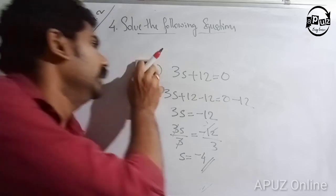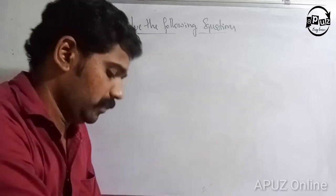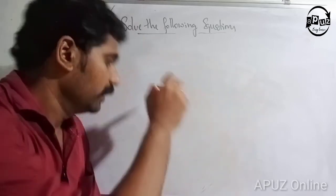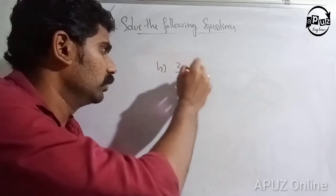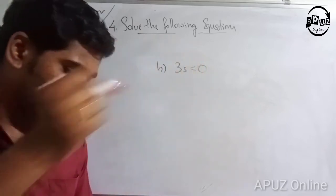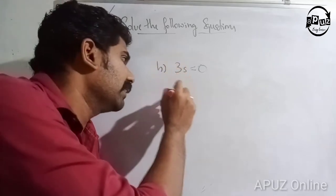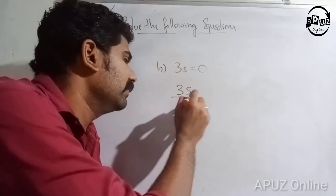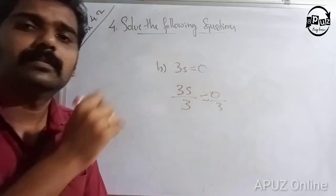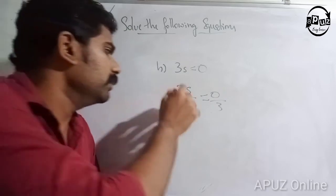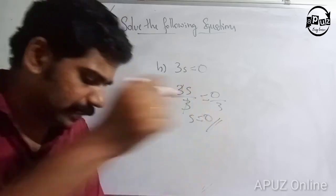Question H: 3s is equal to 0. Divide both sides by 3: 3s divided by 3 is equal to 0 by 3. So s is equal to 0.